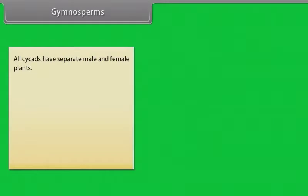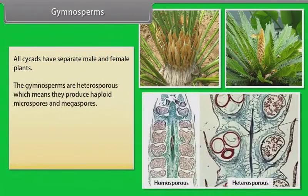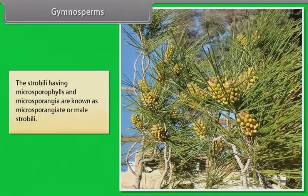All cycads have separate male and female plants. The gymnosperms are heterosporous, which means they produce haploid microspores and megaspores. The two kinds of spores are produced within sporangia that are borne on sporophylls, which are arranged spirally along an axis to form lax or compact strobili or cones. The strobili having microsporophylls and microsporangia are known as microsporangiate or male strobili.